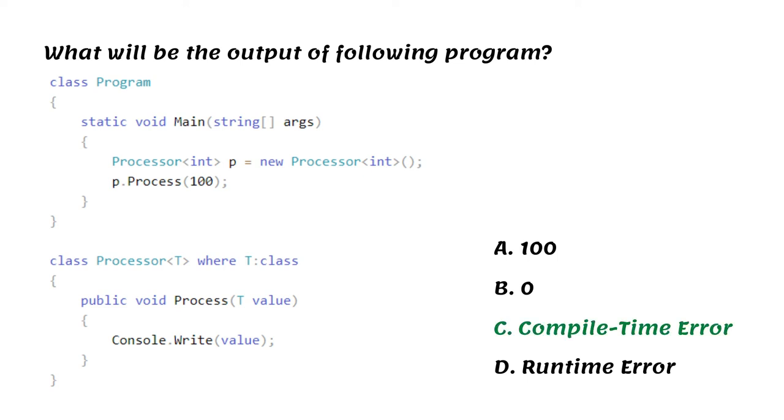Here, a generic constraint is applied to the generic class processor T. A constraint where T class specifies that the type must be of reference type. Since int is not a reference type, it will give a compile time error. If you specify string as a type parameter, then it will work because the string is a reference type. Similarly, you can specify any builtin or custom class as a type parameter to the processor class.